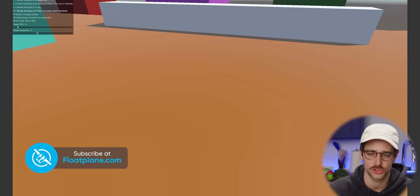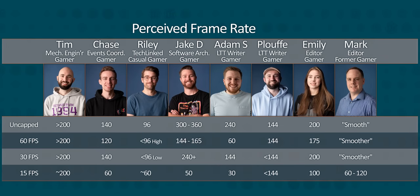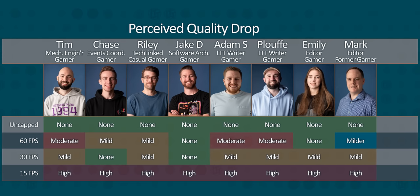We'll have the mostly uncut version of those sessions up on floatplane.com if you want to see more. The gist is that not a single one of our test subjects correctly identified the frame rate, no matter what we set it to. In fact, a surprising number of our respondents thought that 60 FPS felt and looked worse than 30 because they started actively looking for the artifacts. Now, to be fair to our test subjects, they're not idiots — it's really hard to tell in person. And that's part of what makes this test so interesting. But why is it so hard to tell?